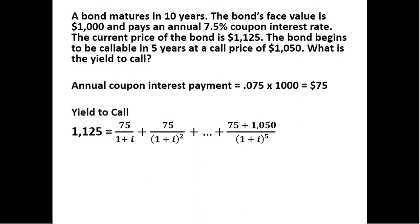So first we calculate the annual coupon interest payment. It's 7.5% of $1,000, the face value of the bond. So we get an annual coupon interest payment of $75.